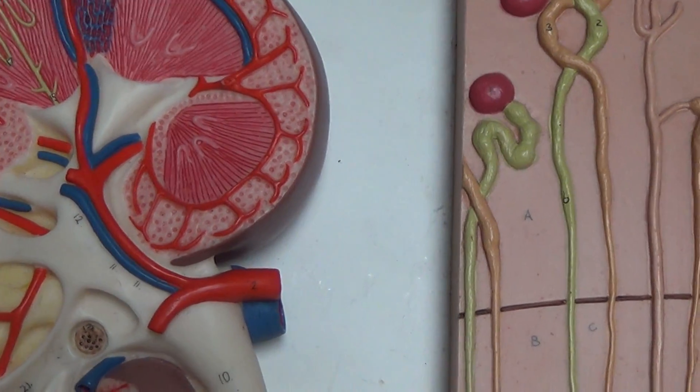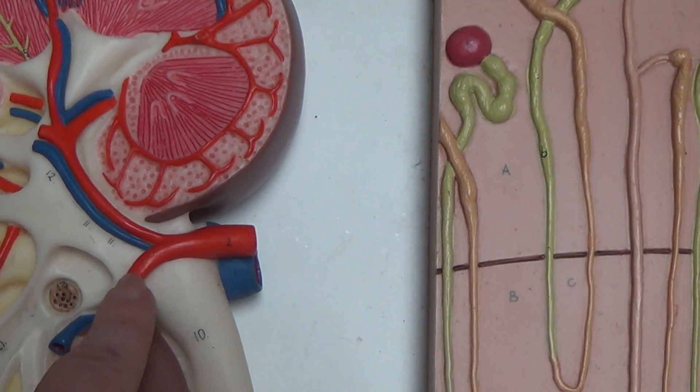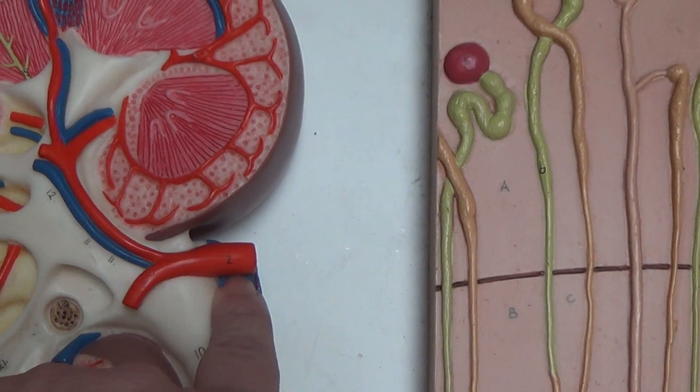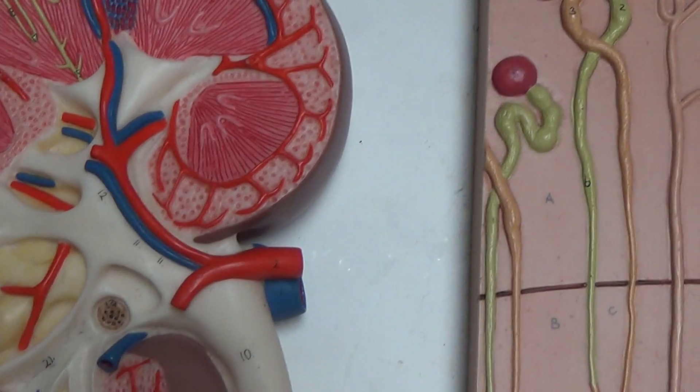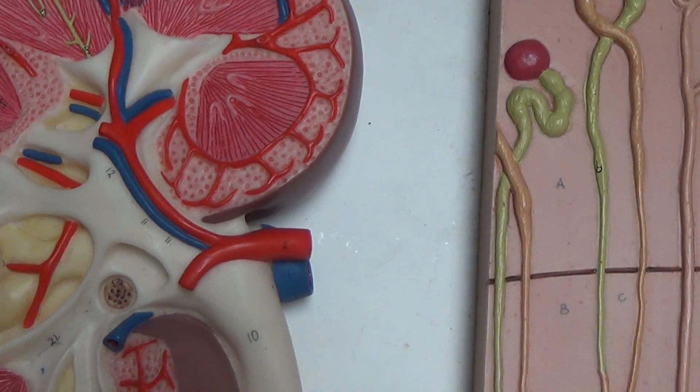So that includes major kidney structure. We also have the renal artery in red and the renal vein in blue. And following that we'll start looking at blood supply because urine formation comes from the blood supply.